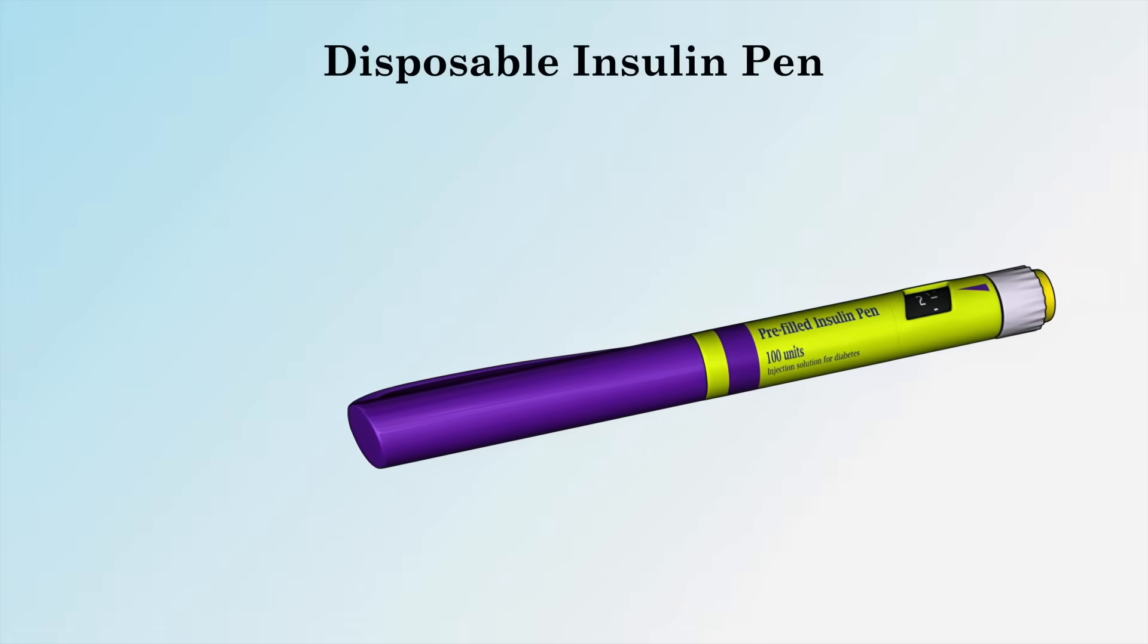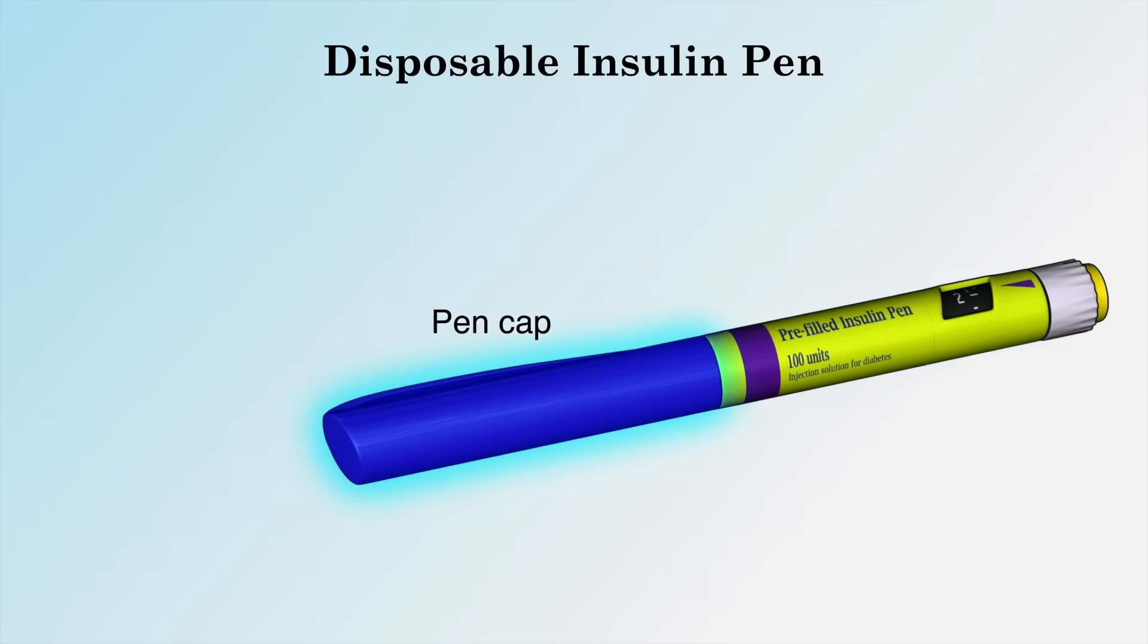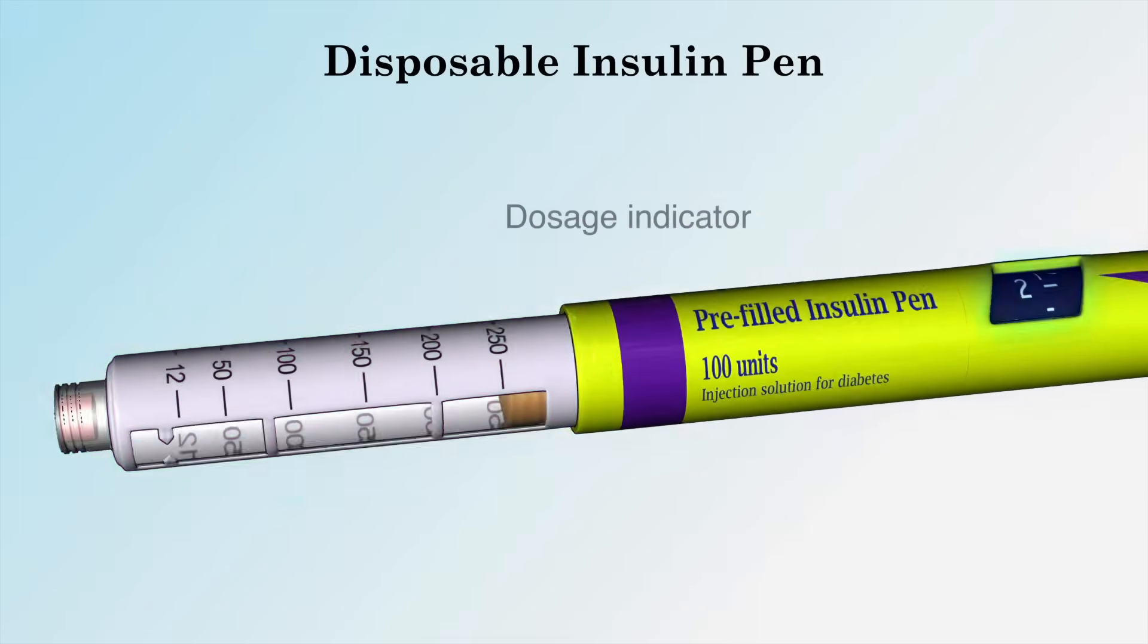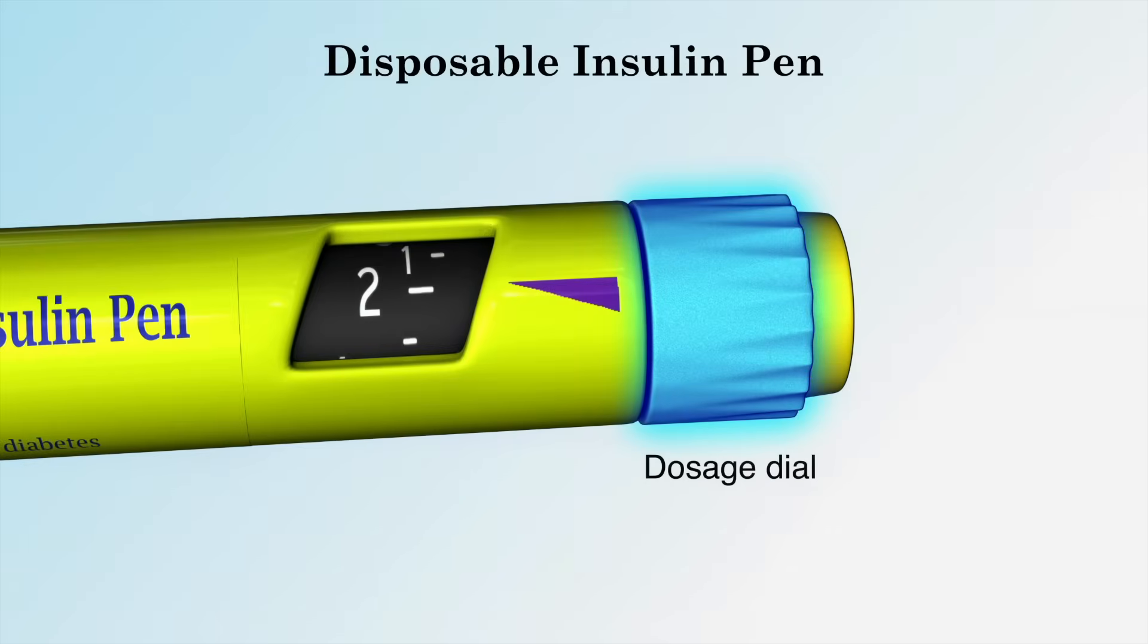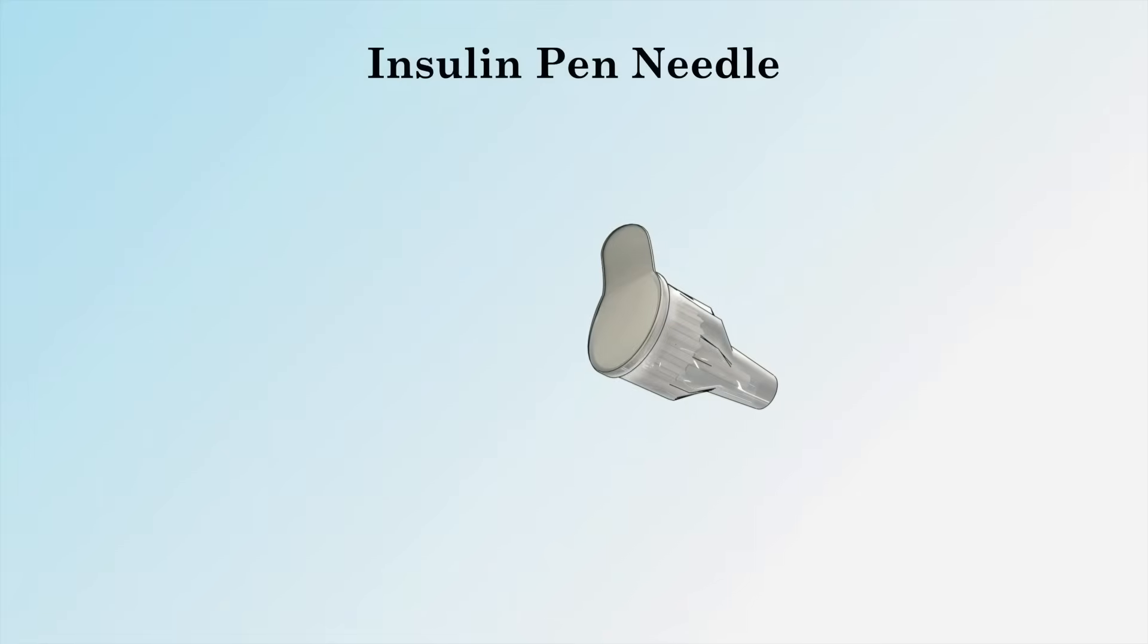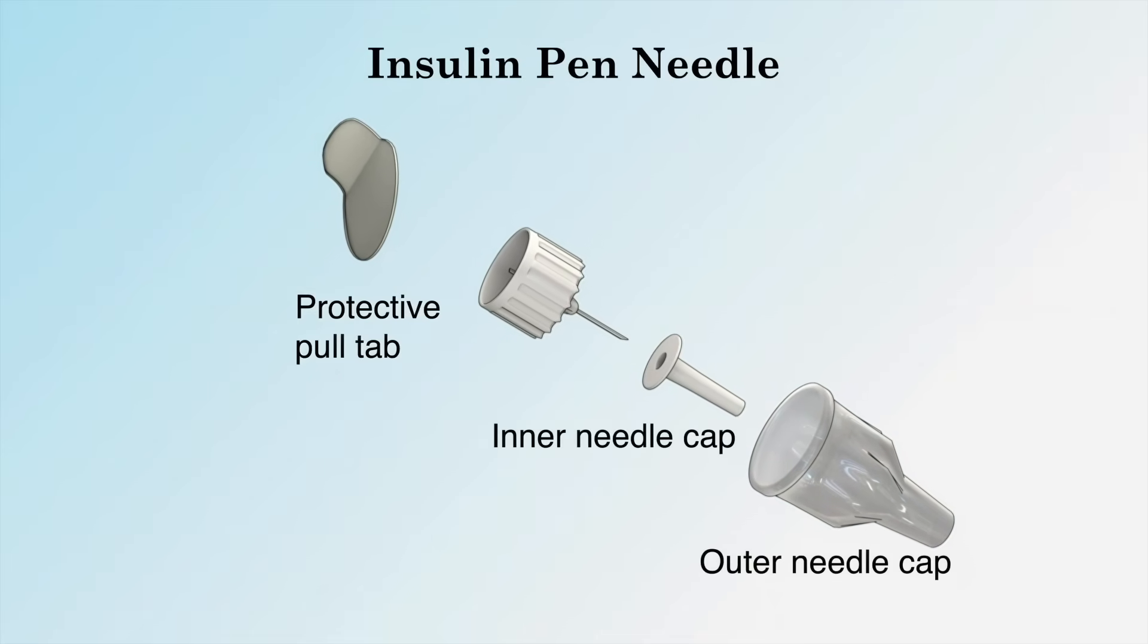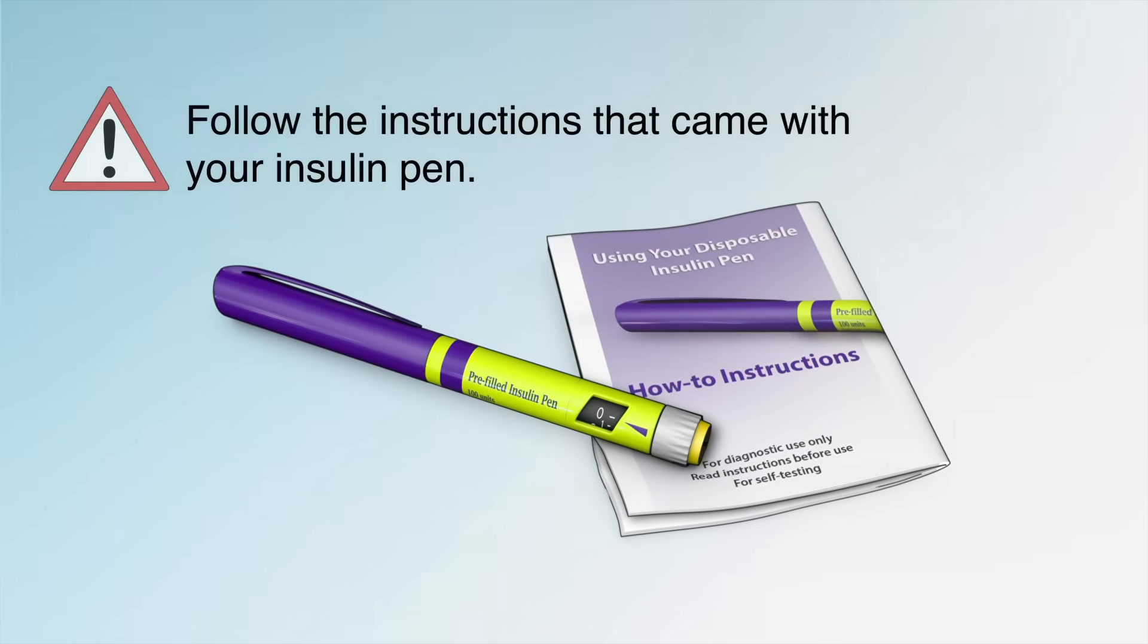A disposable pre-filled insulin pen has the following parts: a pen cap, an insulin reservoir, a dosage selector, a dosage indicator, and an injection button. Insulin pen needles have a protective pull tab and an outer and inner needle cap. Be sure to follow the instructions that came with your insulin pen.